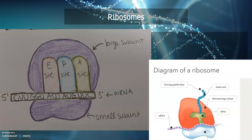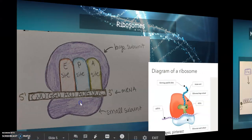In a simplified view, ribosomes are complexes composed of rRNA and proteins, and consist of a small and large subunit. The ribosomal unit binds to the 5' end of the mRNA. Inside the ribosome there are three sites: E, P, and A. But how does this complex build the polypeptide chain?